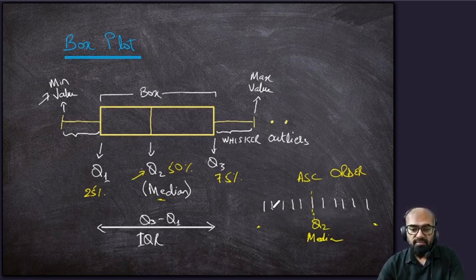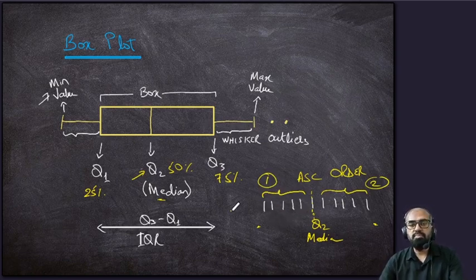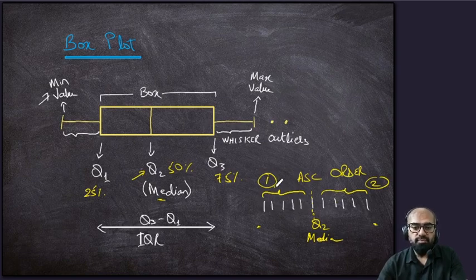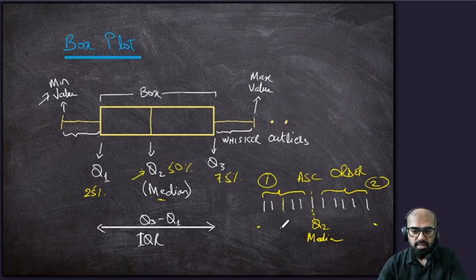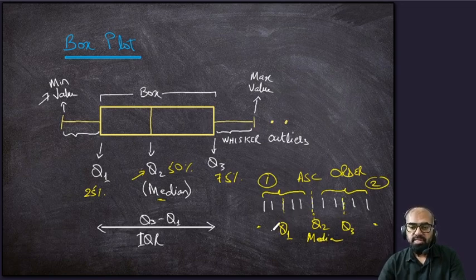What Q2 (the median) does is split our data into two halves — the left half and the right half. We then consider both halves individually and take their respective medians. For the first half, the middle point is Q1. Similarly, for the second half, the middle point is Q3. In this way we calculate the three quartiles: Q1, Q2, and Q3, and we can now draw a box.